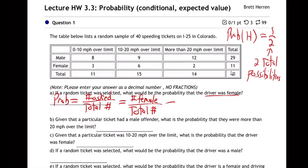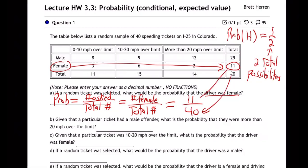So what's the number of females in this scenario? Is it 11? Yes, good — that's total females. And then the total total is 40. So it's 11 out of 40.